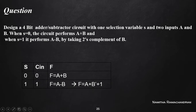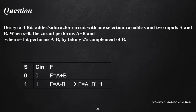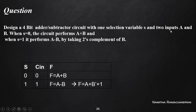Welcome back to this video. We will consider a university question and its solution. The question is from module 5 and is based on the design of an ALU. The question asks us to design a 4-bit adder or subtractor circuit with one selection variable S and two inputs A and B.